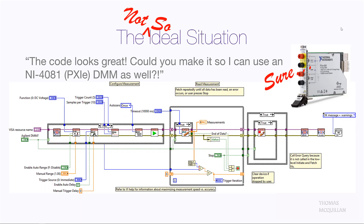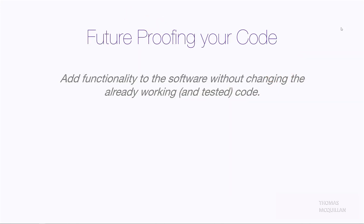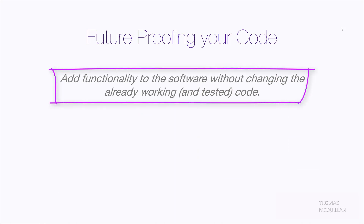But now it transforms our really well-written code into a piece of code with lots of nested structures, and actually changes already tested and commissioned code. That's really bad news, because if we change commissioned code, it means we then need to re-commission it, and also carry on testing it — this is a prime candidate for introducing bugs. So to future-proof our code, we want to be able to add functionality to the software without changing the already working, and more importantly, tested code. We just don't want to risk it.